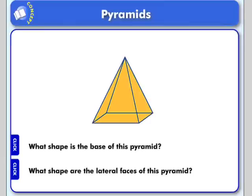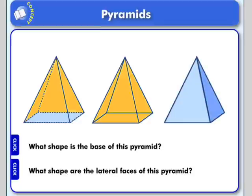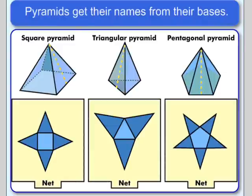So what shape is the base of this pyramid? It's a little bit hard to tell, but it could be a rectangle or a square. The sides are triangles. Now much like prisms, pyramids get their name from their bases. The base in this first example is a square — that's a square pyramid. The second one has a triangular base — that's a triangular pyramid. And there are also rectangular pyramids.